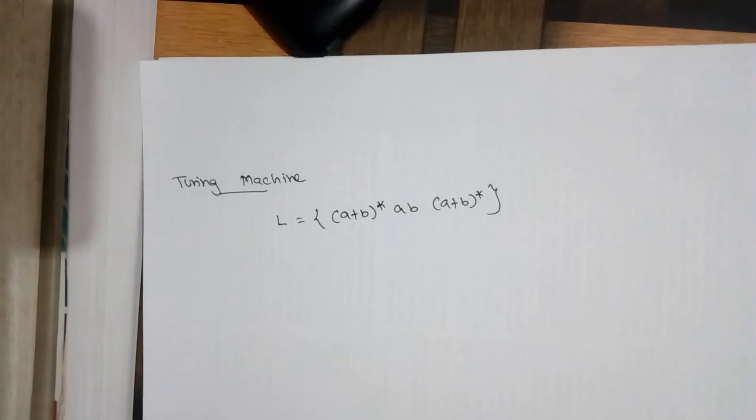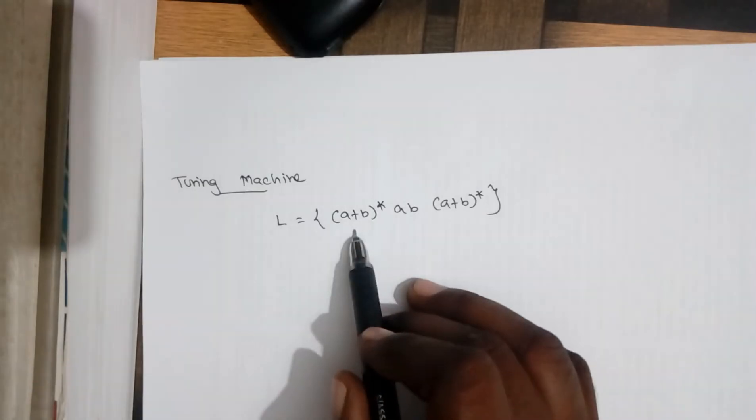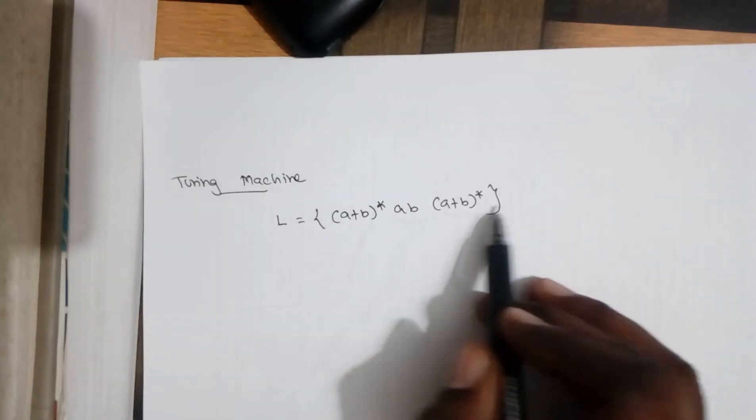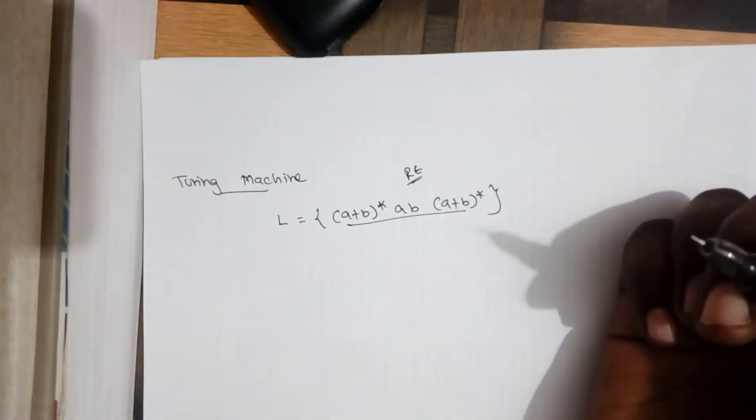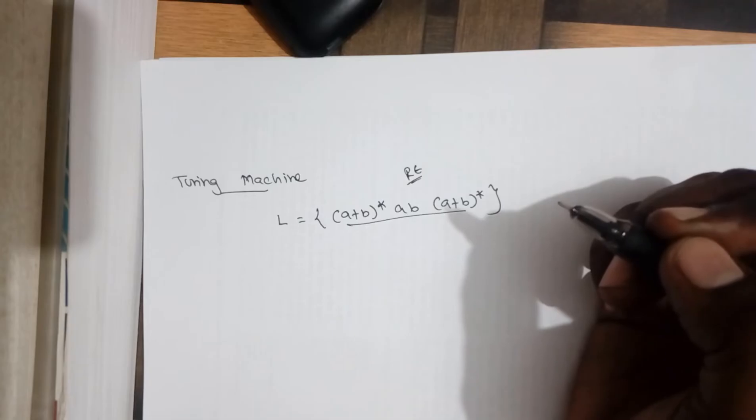Now we will consider one more example for this Turing machine. Here, this expression you are familiar with - what is this called? A regular expression. A regular expression is one for which we can construct a finite automata for it.